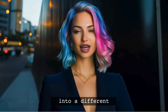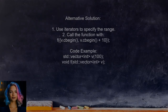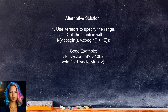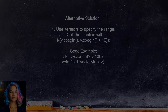Another user shares a different approach also involving iterators. If you have a vector with 100 elements, you can call the function with the first 10 elements by using the syntax f(v.cbegin(), v.cbegin() + 10). This creates a new vector from the specified range and passes it to the function.